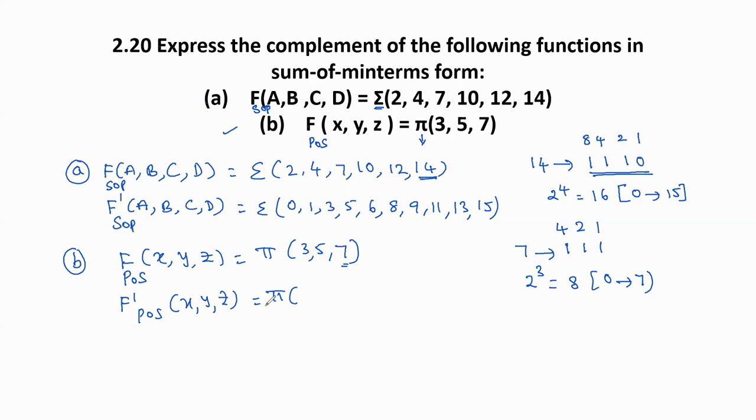The complement of the Boolean function has missing maxterm numbers: 0,1,2,4,6. So totally 8 maxterm numbers. But in the given problem, express the complement in terms of sum of minterms. To represent this f' POS in terms of SOP, again take the complemented value of pi. Complemented value of pi means sigma.